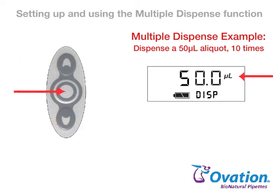Press and release the center button to lock in this new volume setting and advance to the current count setting. The count setting will either be the last number of dispenses used or the maximum number of full dispenses that can be performed at the new volume setting.